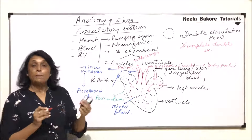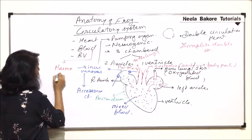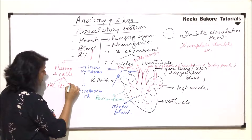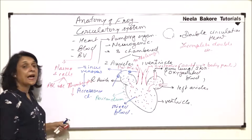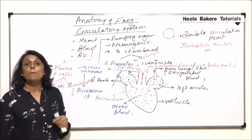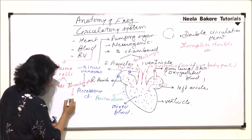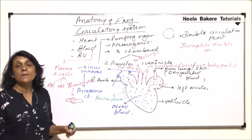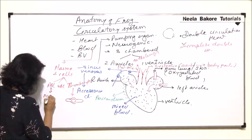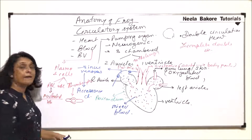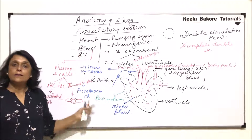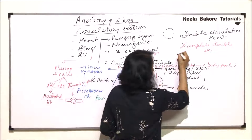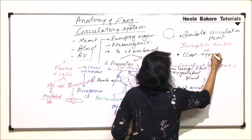Now coming to the blood — it has both plasma and cells. The cells are of three types: RBCs, WBCs, and thrombocytes (instead of platelets). Thrombocytes are nucleated cells; in our case platelets are present and are without nuclei. RBCs in frogs are also nucleated and contain the red pigment hemoglobin. Blood vessels are again arteries, veins and capillaries — meaning blood never comes out of the blood vessels, so the circulation is a closed type.